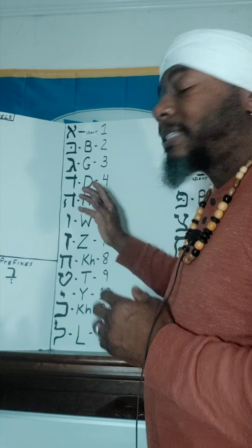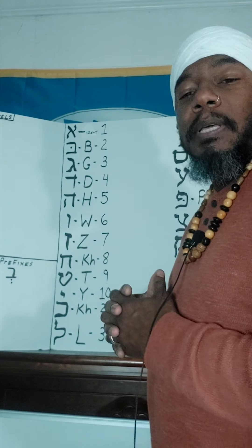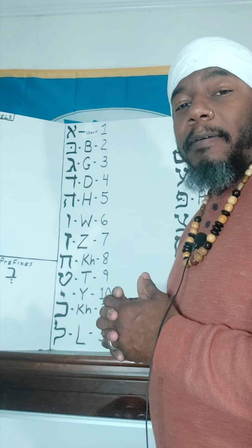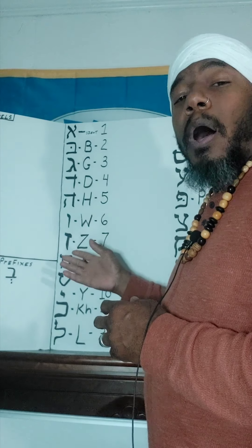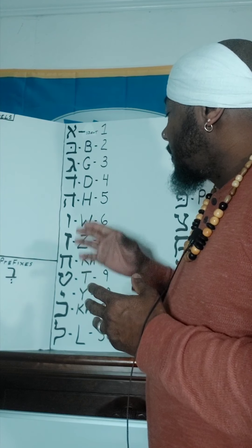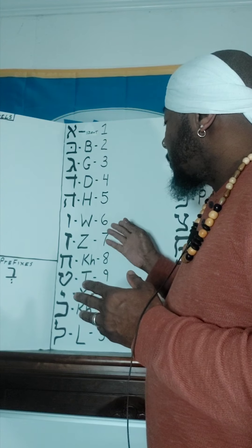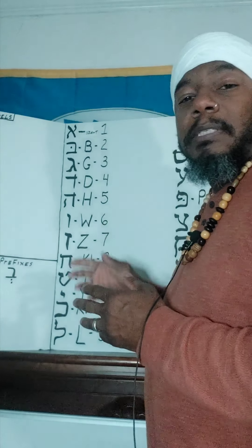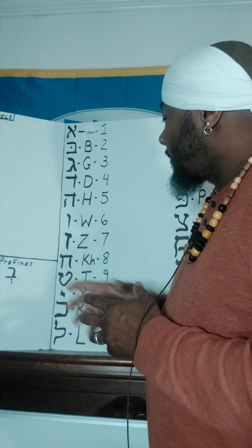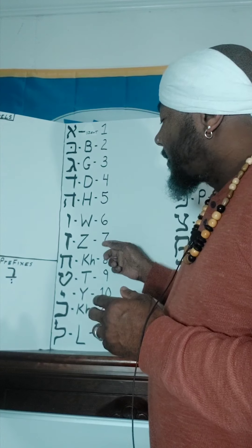The next letter is the Hey. The English equivalent is the letter H. The numeral value is the number five. The next letter is the Wav. The English equivalent is W, and many will say that it's V. The numeral equivalent to the Wav is the number six. The next letter is Zion. The numeral equivalent is the number seven.